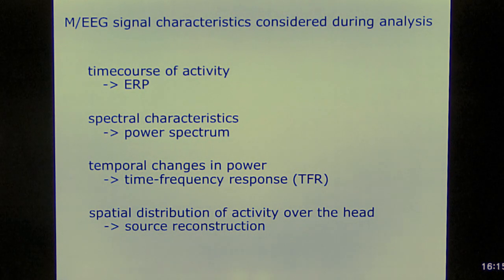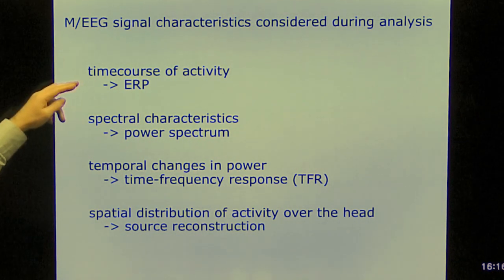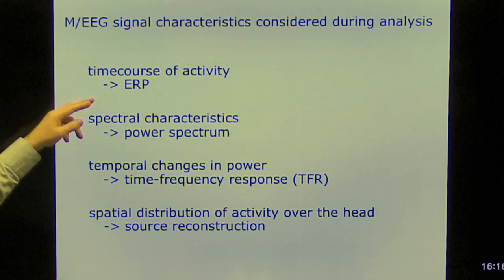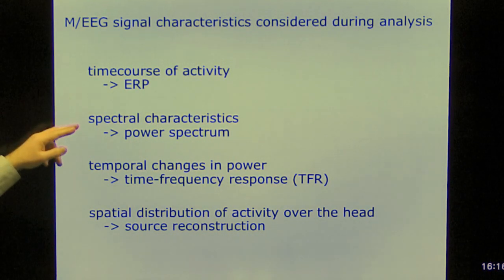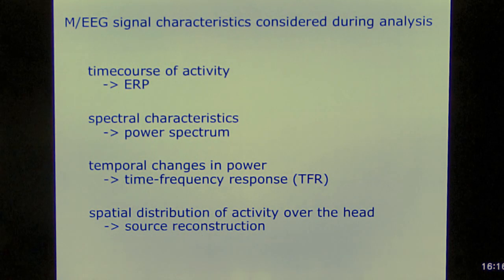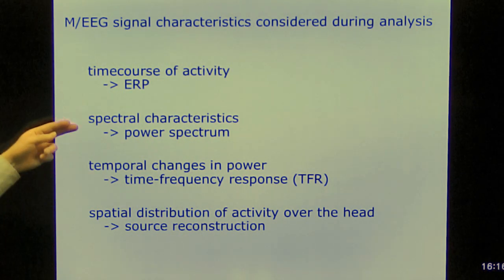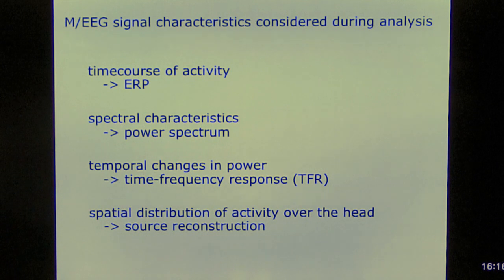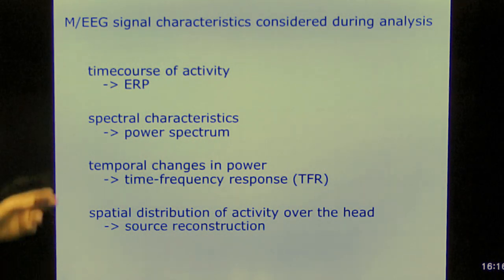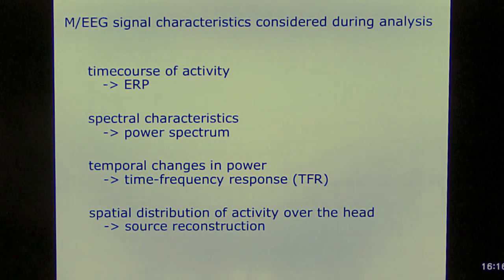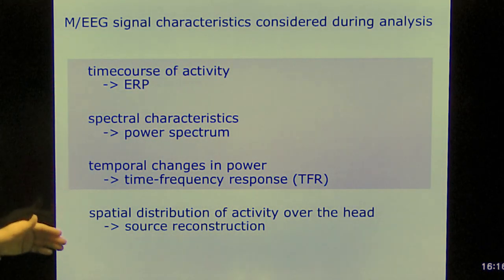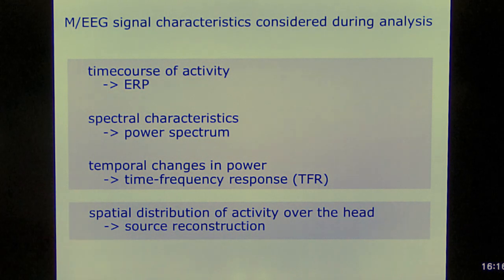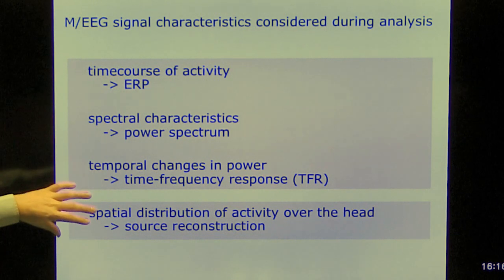If we look at the characteristics of the MEG data, then we can look at the time course of activity, for example, with event-related potentials or fields, at the spectral characteristics using the power spectrum, fast Fourier transforms. We can look at the temporal changes in the power spectrum with wavelet techniques, but we can also look at spatial distribution of the activity over the head. These all have to do with the time series and these have to do with the spatial characteristics. A lot of the analysis strategies are focused either on one or on the other.